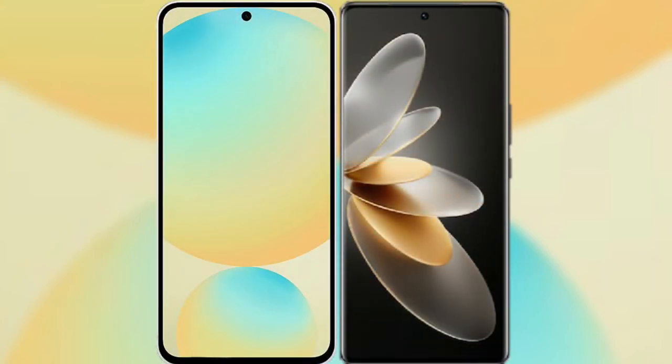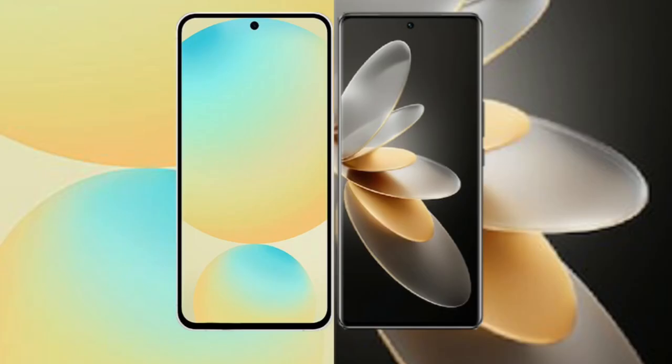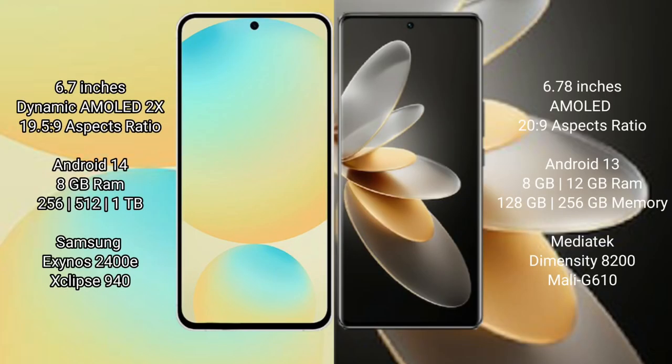I will compare the new Samsung Galaxy S24 FE with the vivo V27 Pro. The Samsung Galaxy S24 FE features a 6.7-inch dynamic AMOLED display with an aspect ratio of 19.5:9, while the vivo V27 Pro features a 6.78-inch AMOLED display with an aspect ratio of 20:9.